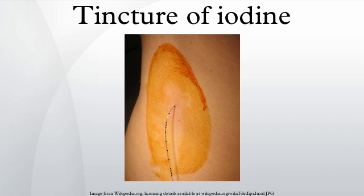Iodine tincture solutions are characterized by the presence of alcohol, and about the same amount of elemental iodine as iodide. Lugol's iodine, by contrast, has no alcohol, and has twice the amount of iodide as elemental iodine.